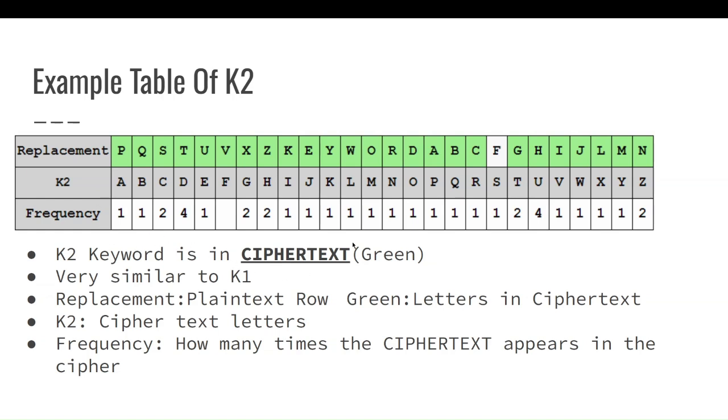So our K2 keyword is going to be in the ciphertext. That means these letters that we have in green, these are the letters that we're going to have in our cipher. These are letters that they're going to give to us, these are the ciphertext letters. And we can see that the letter F isn't white because it's not in the ciphertext. But you do have S, which is part of the ciphertext letters, and not part of the plaintext letters, which means S is going to be part of the ciphertext as well.